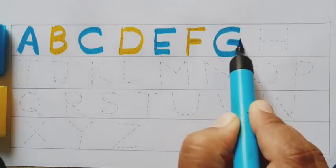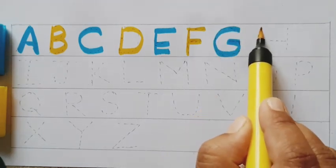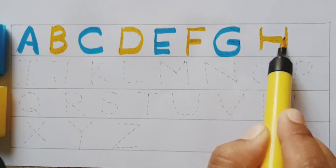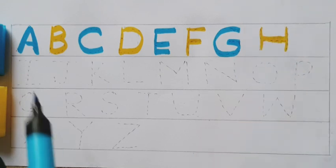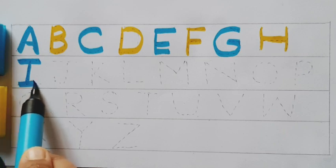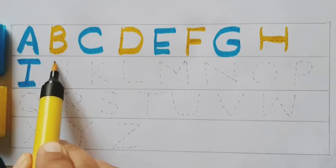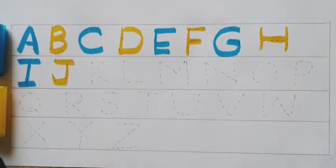G. G for grass. H. H for horse. I. I for ice cream. J. J for jungle.